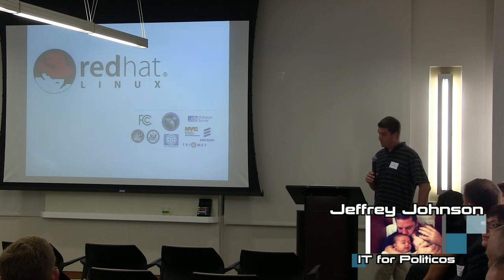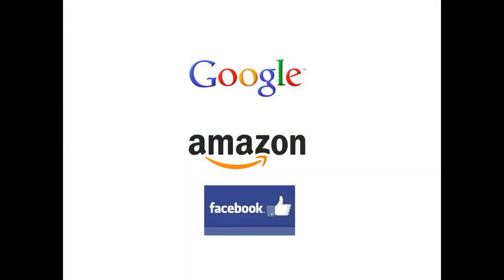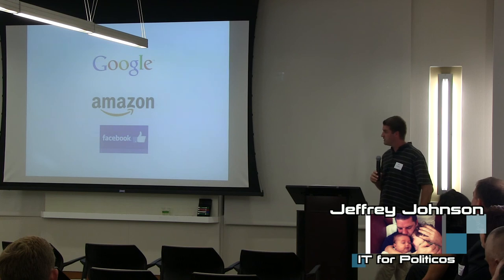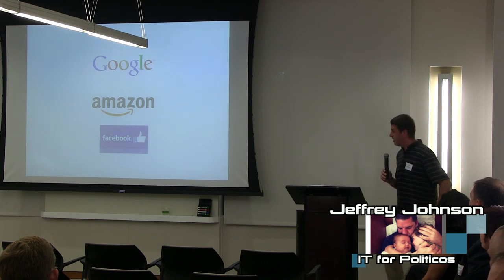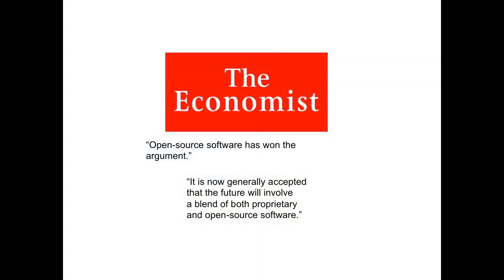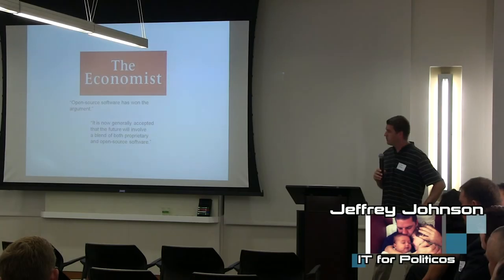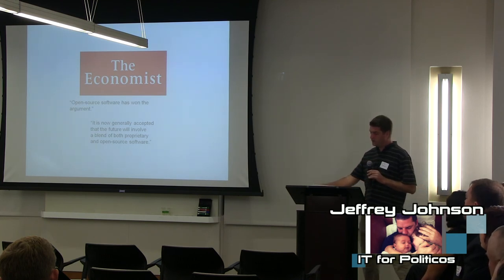It's also really important to note that companies like Amazon, Google, Facebook, and Twitter — things you use every day — are built almost entirely on open source software. They may not open source all of their own code, but the building blocks of their infrastructure are almost entirely software that you and your organizations could also use for free, and many of them contribute to large and growing open source projects. The Economist — the arbiter of free market economics — has looked into this phenomenon and declared that open source software has won the argument, stating it's now generally accepted that the future will involve a blend of proprietary and open source software.